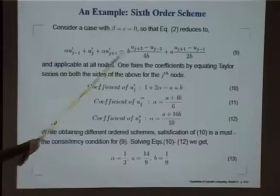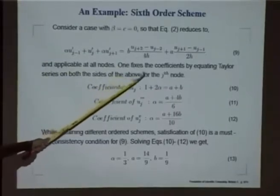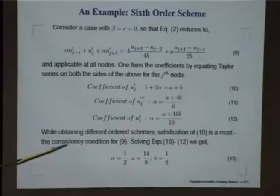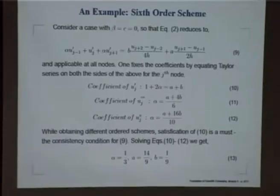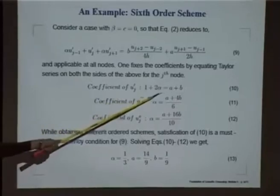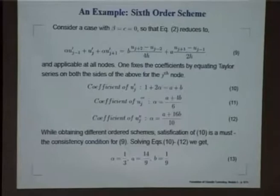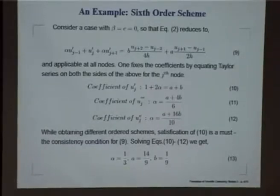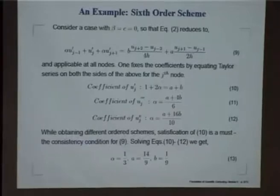However, this scheme we can only use from j=3 to n-2; for j=1 and 2 this equation will not work, and the same for j=n and n-1. I would like to draw your attention to what I call here the consistency condition: we are in the business of evaluating the first derivative, so come what may we will have to satisfy the equation for the coefficient of u prime — that is our basic business. Satisfaction of this equation is a must, and that is why it is called the consistency condition. The coefficients of u prime give you the consistency condition which you cannot give up.